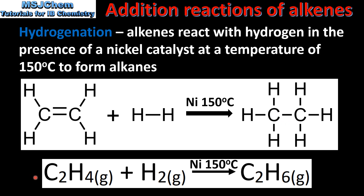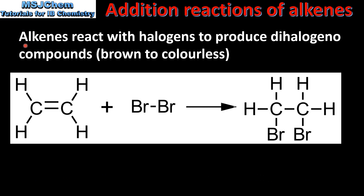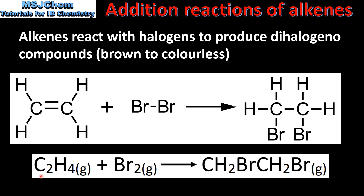Here we have the equation for the reaction. The next addition reaction is the reaction of alkenes with halogens. Alkenes react with halogens to produce dihalogeno compounds. Here we have ethene reacting with bromine to form a dihalogeno compound. In this reaction we get a colour change from brown to colourless as the bromine reacts with the ethene. At the bottom we have the overall equation for the reaction, and the name of the product is dibromoethane.